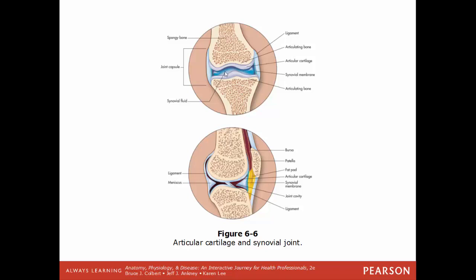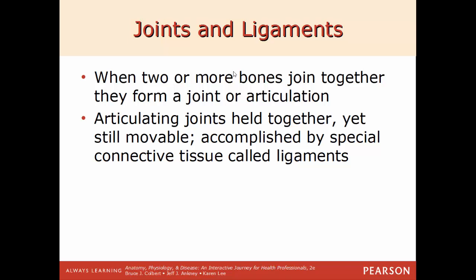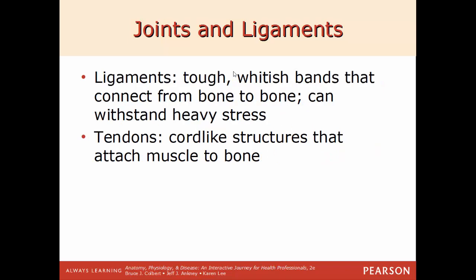Now we'll talk about joints and ligaments. When two or more bones join together, they form a joint — or formally, an articulation. Articulating joints are held together but still movable, done by connective tissue called a ligament. Ligaments are tough, strong, whitish bands of connective tissue that connect bone to bone. Tendons are cord-like pieces of connective tissue that attach muscle to bone — so ligaments go bone to bone, tendons go muscle to bone. A good example is the Achilles tendon, which attaches the calf muscle, the gastrocnemius, to the back of the heel, the calcaneus.